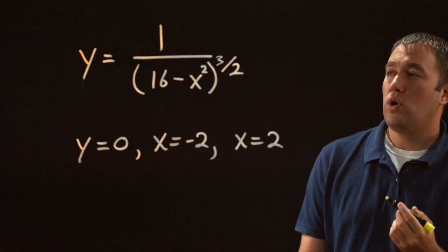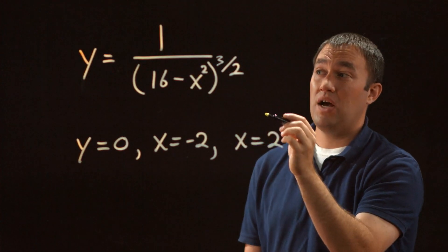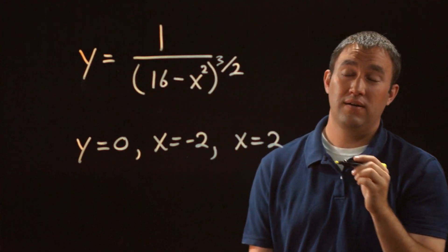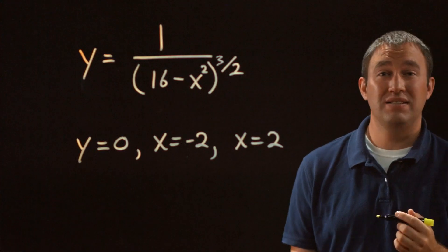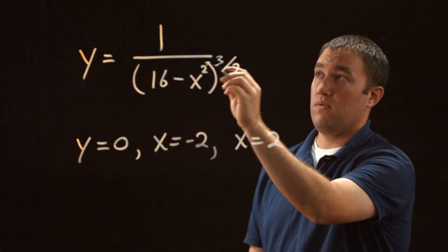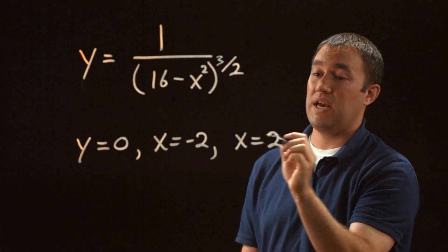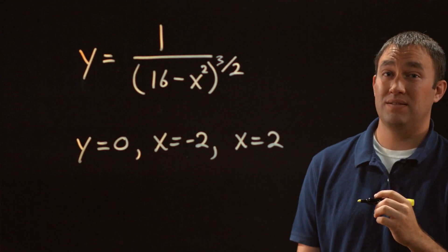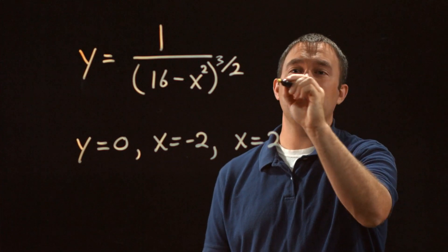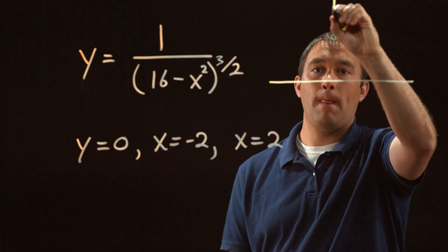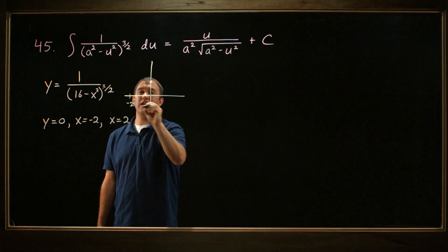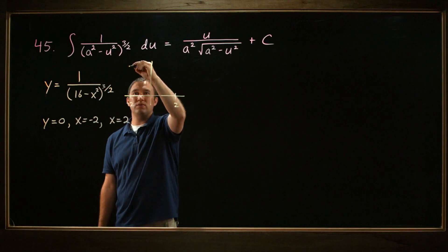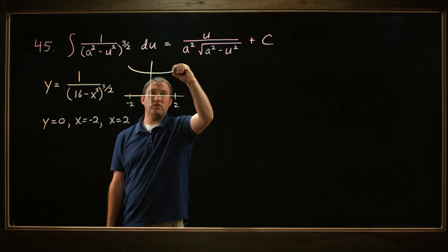We could plug this into a graphing utility and get an idea of what this curve looks like. If you did that, you might not see very much. This curve, really close to x equals negative 2 and 2, is very, very close to the x-axis. If you zoomed in quite a bit, you would see something that looks like this. From negative 2 to 2, it would do some sort of thing that looks like that.